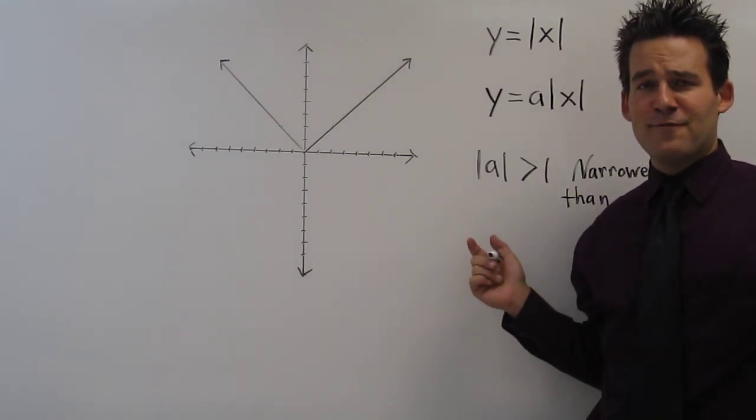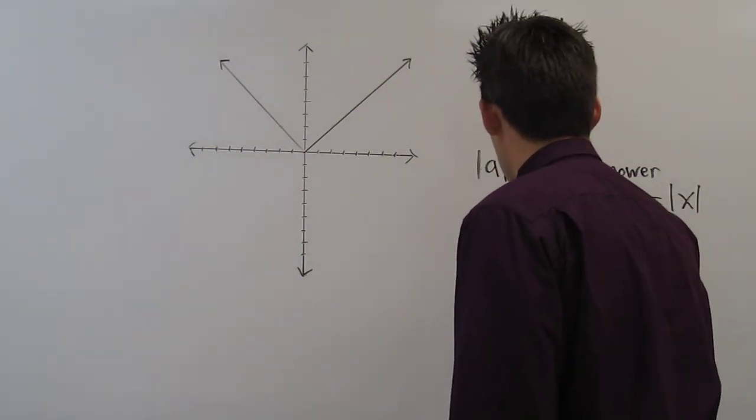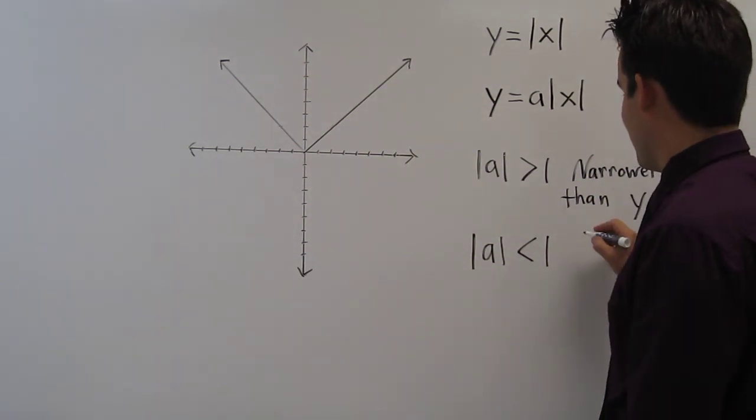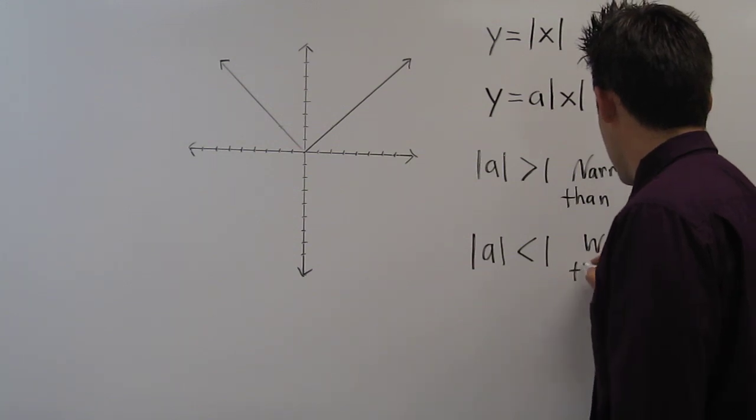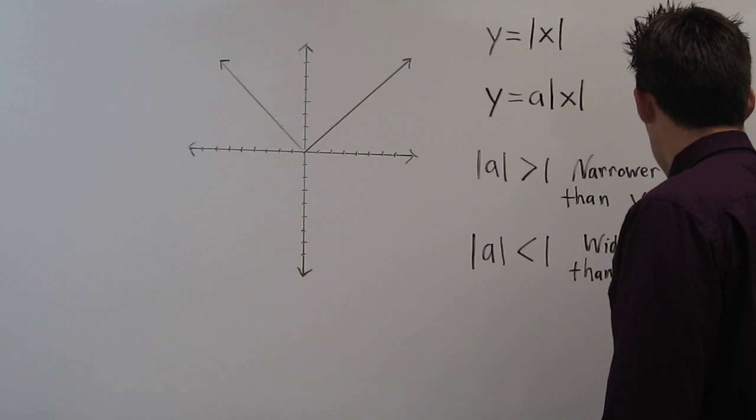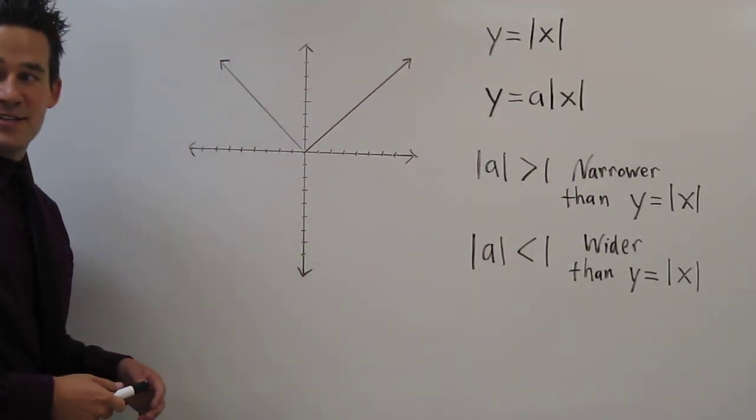Now if the absolute value of a is less than 1, the graph is going to be wider than the parent function. So let's graph a few examples.